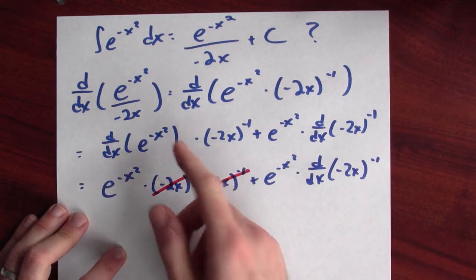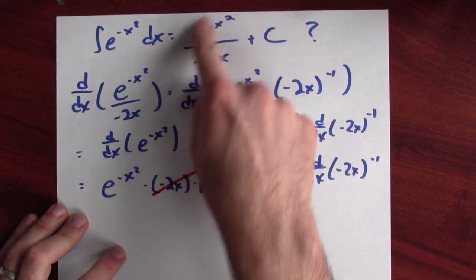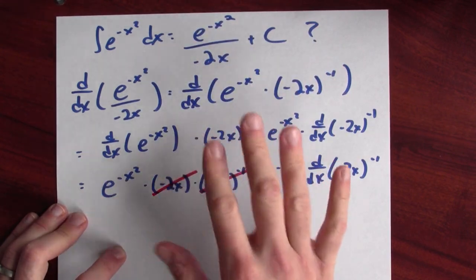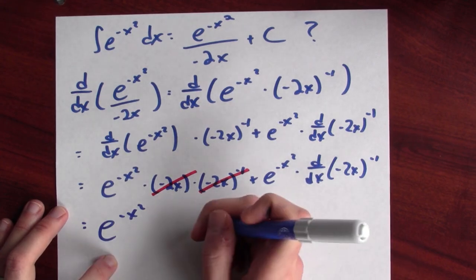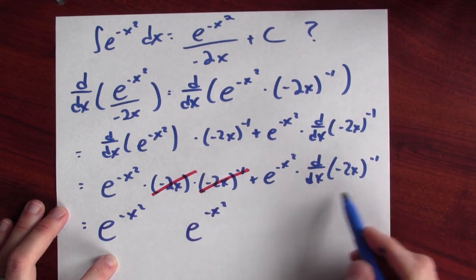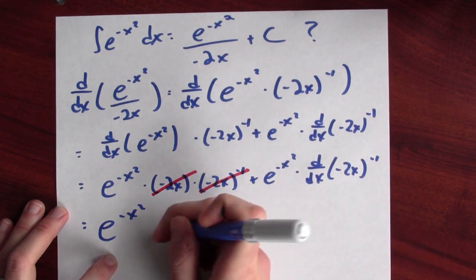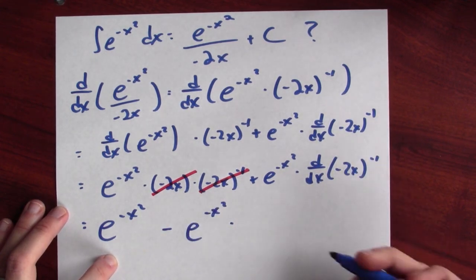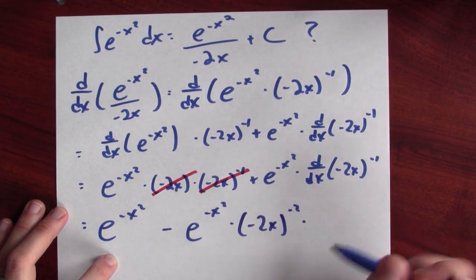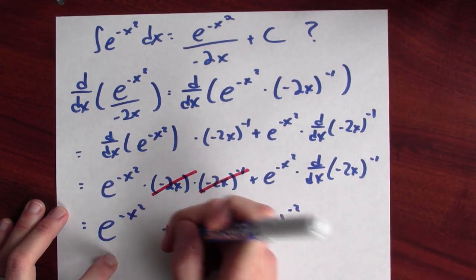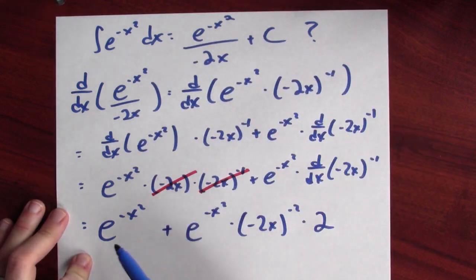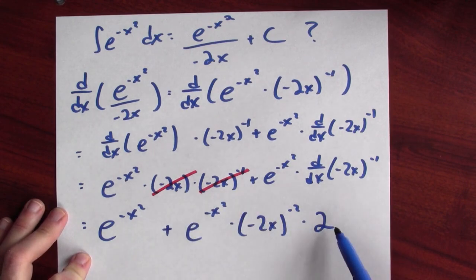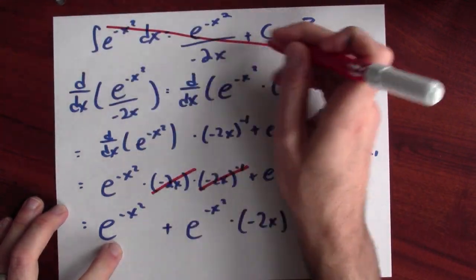This is looking pretty good. Maybe the anti-derivative of e to the minus x squared really is this, because when I differentiate this thing, at least I get an e to the minus x squared. The bad news is that I also get this remaining term. This turns out to be e to the minus x squared times the derivative of minus 2x to the minus first power — a negative sign times this thing to the negative second power, and by the chain rule times the derivative of the inside, which is negative 2. This is bad — I differentiated this thing and I got back something that included e to the minus x squared but also includes this non-zero term. So this is not the case. That didn't work, but it wasn't for lack of trying.